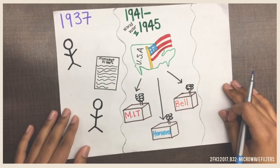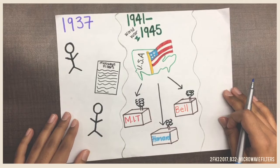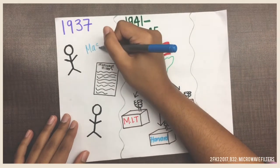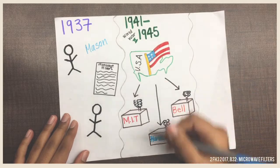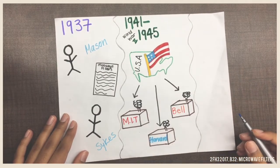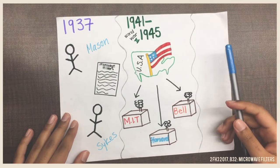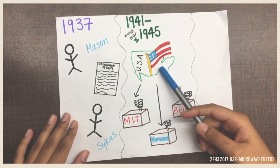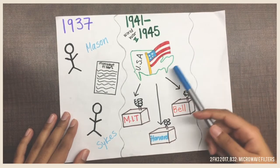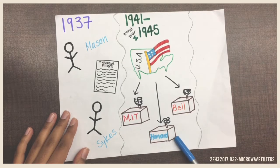How do microwave filters come about? The first significant appearance of microwave filters was in 1937, in a paper by W.P. Mason and R.A. Skites. Major advances on microwave filters were made in various labs in the United States during World War II in the years 1941 to 1945, at places like the MIT Radiation Lab, Harvard Research Radio Lab, and Bell.